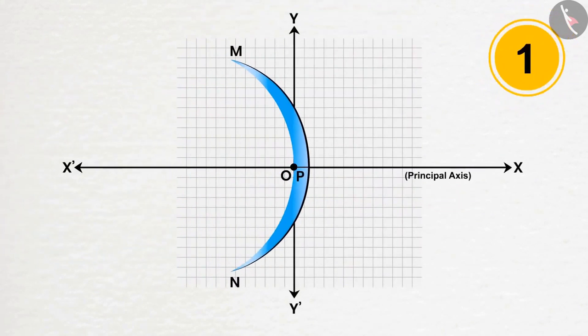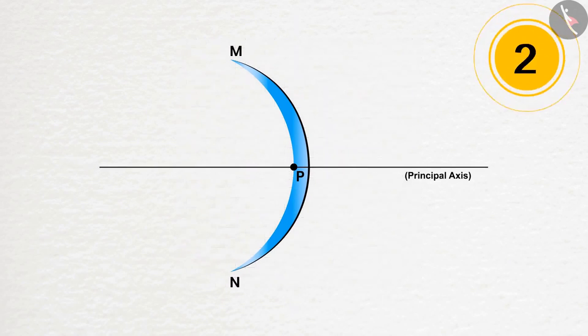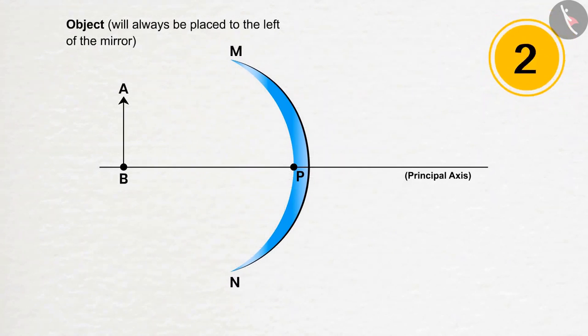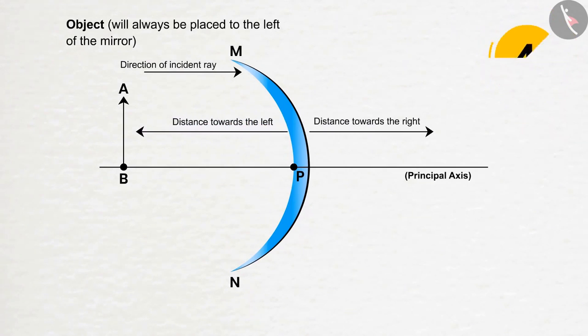placed at the origin O of the coordinate system. Two: The object will always be placed to the left of the mirror, meaning light coming from the object will always fall from the left side. Three: All distances parallel to the main axis will be measured from the pole. Four: All distances to